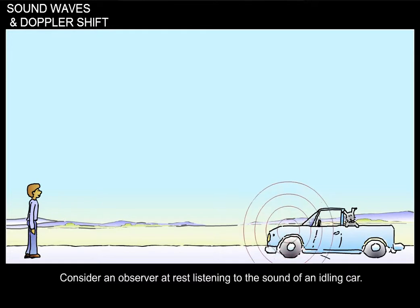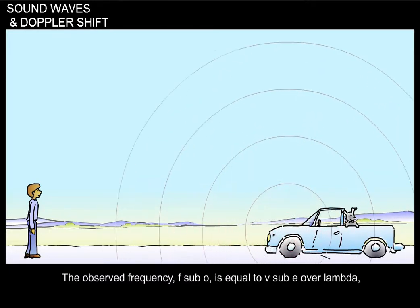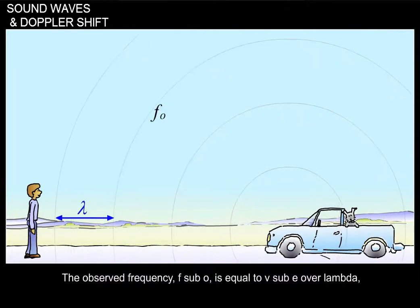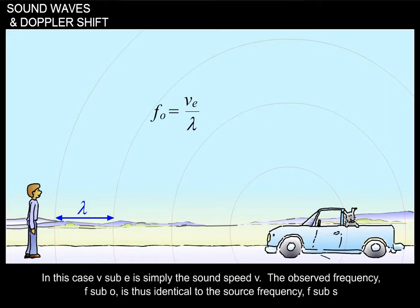Consider an observer at rest listening to the sound of an idling car. The observed frequency F sub O is equal to V sub E over lambda, where lambda is the wavelength of the sound and V sub E is the effective velocity of the sound perceived by the observer. In this case, V sub E is simply the sound speed V. The observed frequency F sub O is thus identical to the source frequency F sub S.